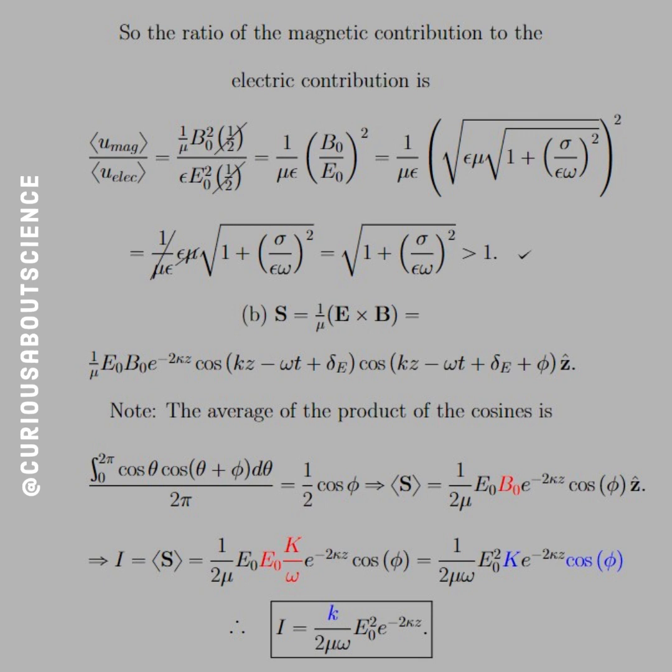And since it's much greater than one, we know that the ratio, the electric is going to be tiny compared to what the magnet gives. If we have some big number, big divided by small equal big.